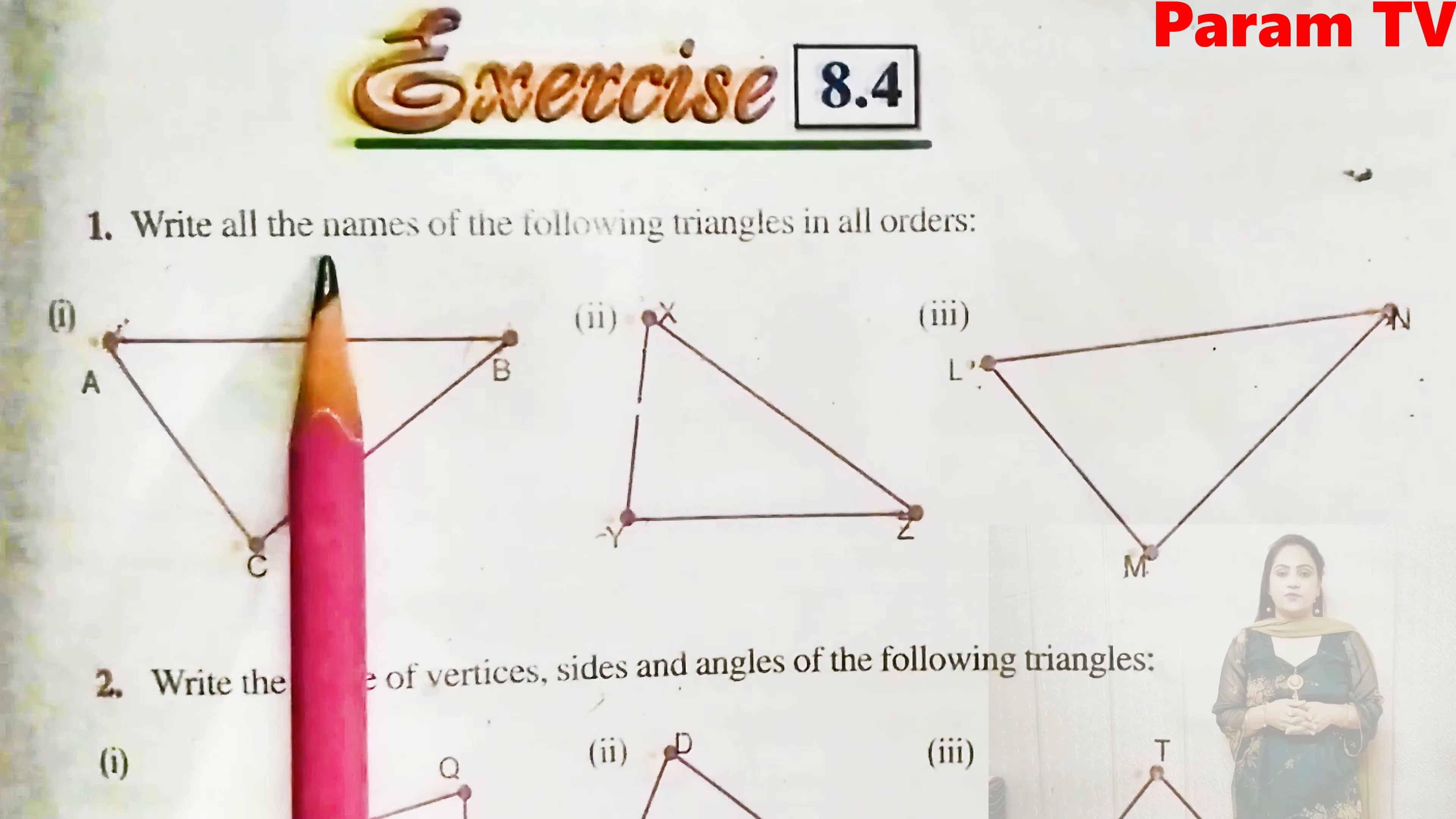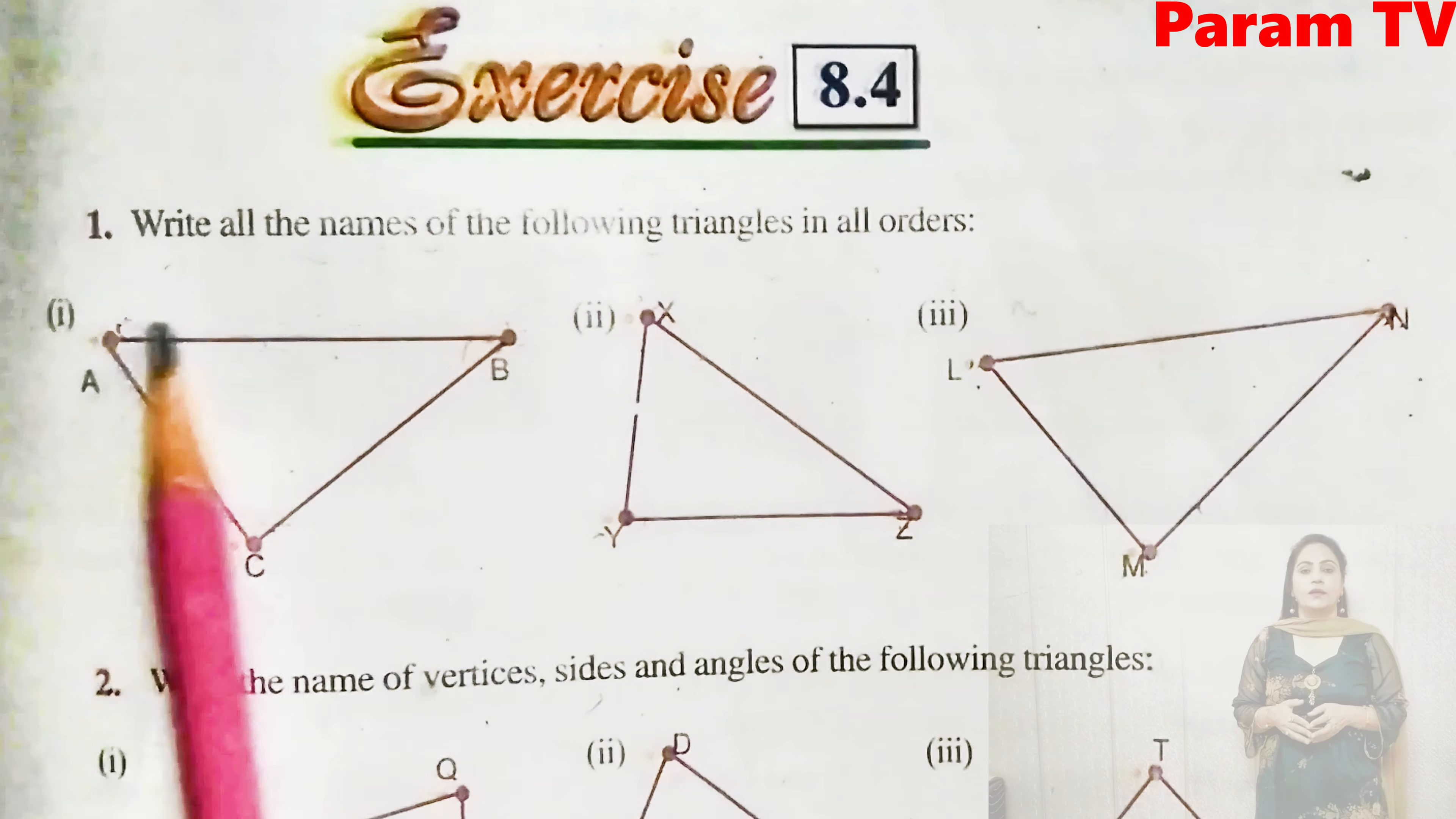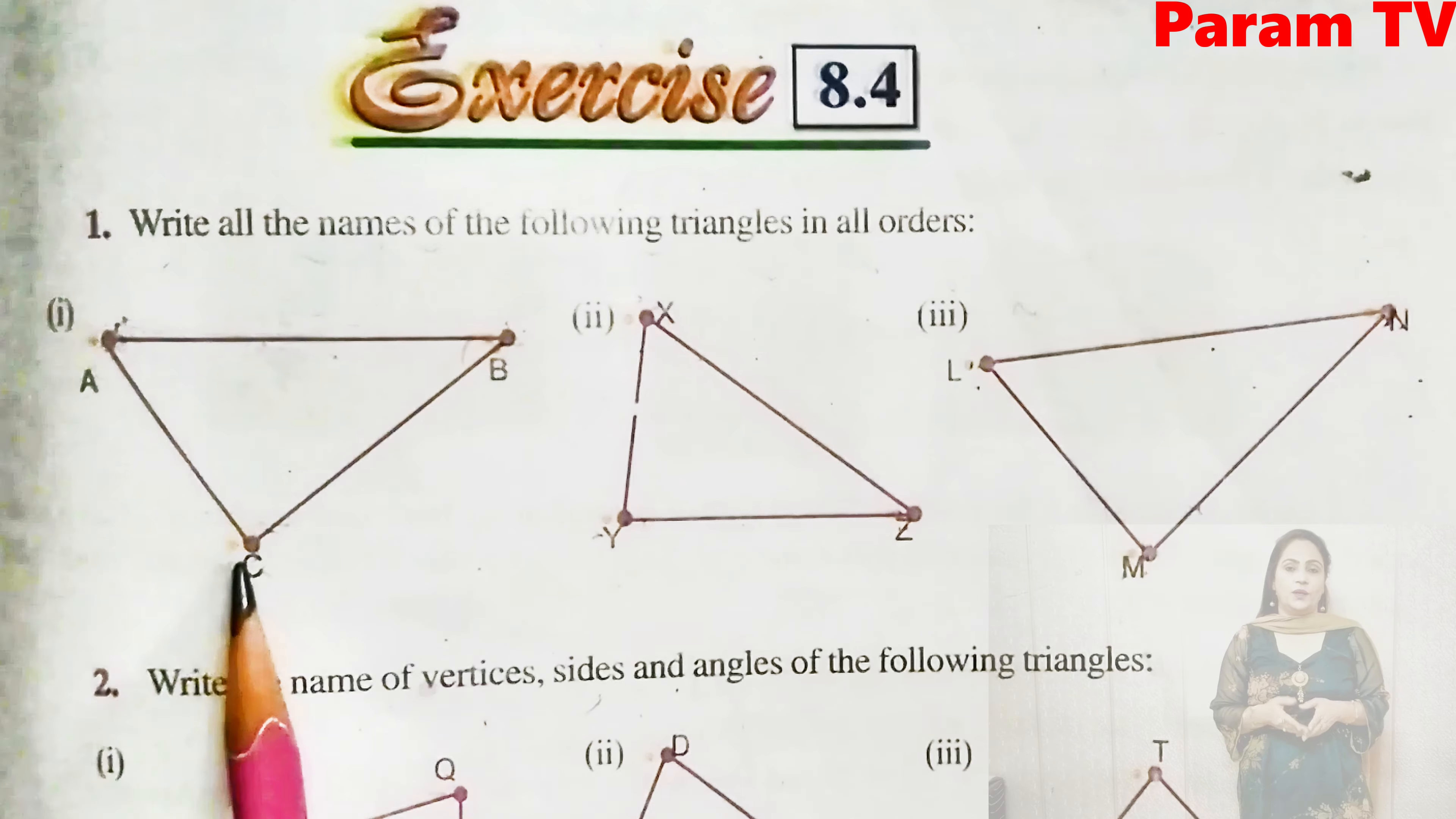First question is, write all the names of the following triangles in all orders. Some triangles have been given to you. They have to write their name in every order. See what is the triangle? It is made of three line segments. It has three sides, three vertices, three angles.